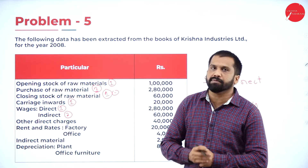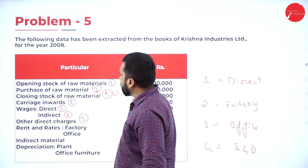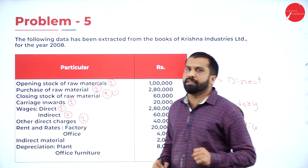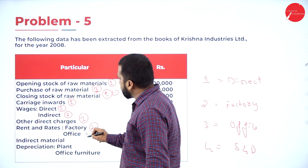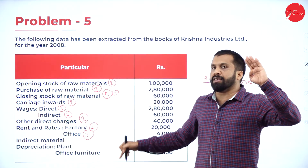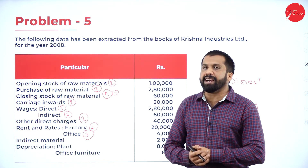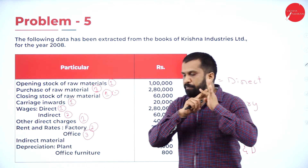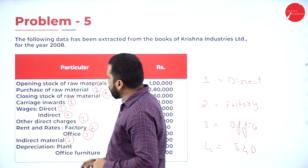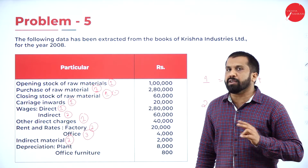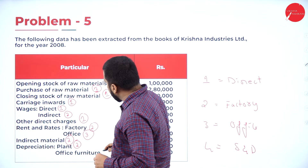Other direct charges go to category 1. Rent and rates: factory rent comes under category 2, office rent comes under category 3. Compared to your first problem, now we are in the third or fourth problem and you are more familiar with these words — by reading, you can identify whether it goes to 1, 2, 3, or 4. Indirect material goes to category 2. Depreciation: plant means machinery, so plant depreciation comes under category 2; office furniture depreciation comes under category 3.